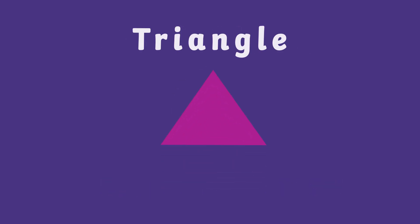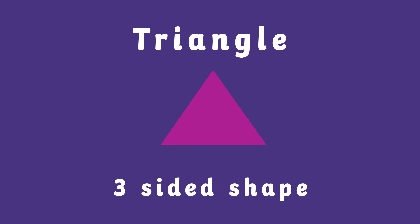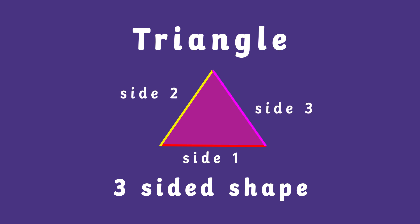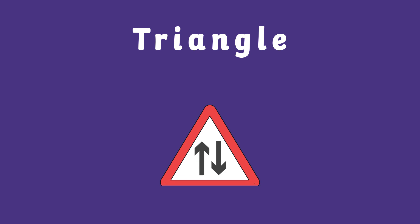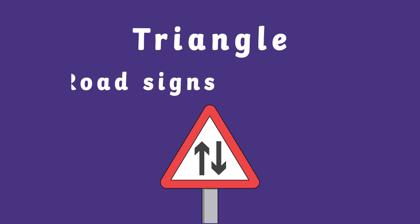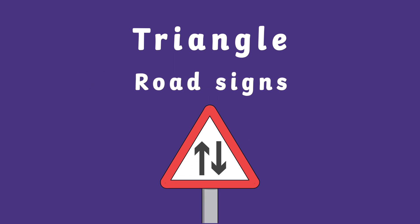A three sided shape can be found with a triangle. Side one, side two, side three. Road signs are an example of where the shape can be found.